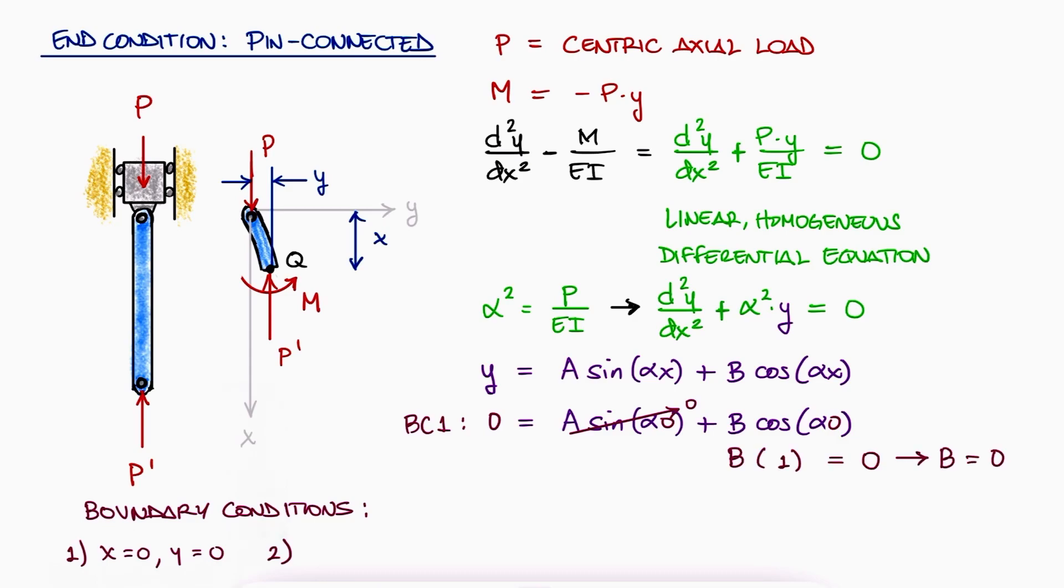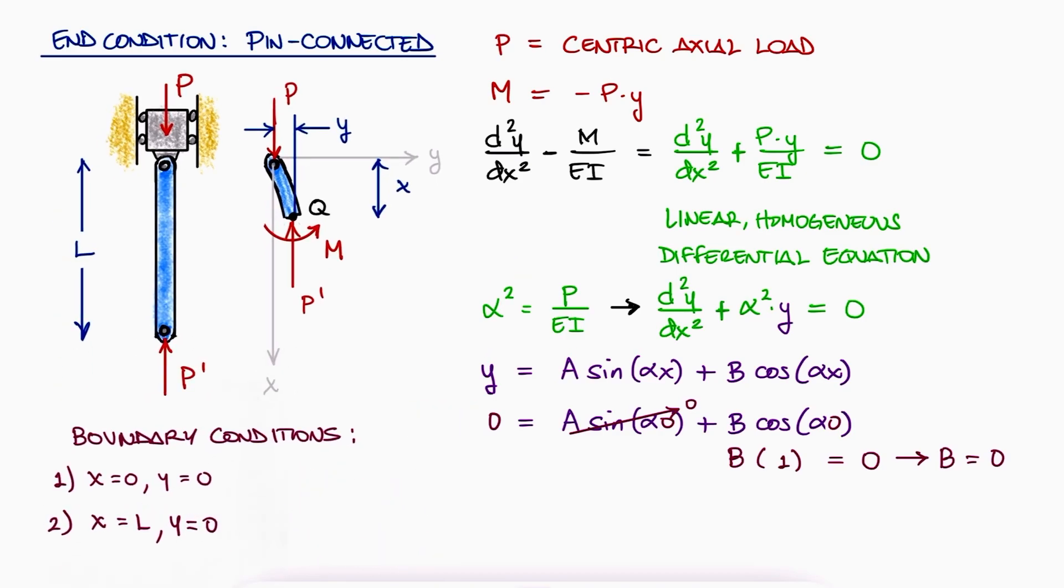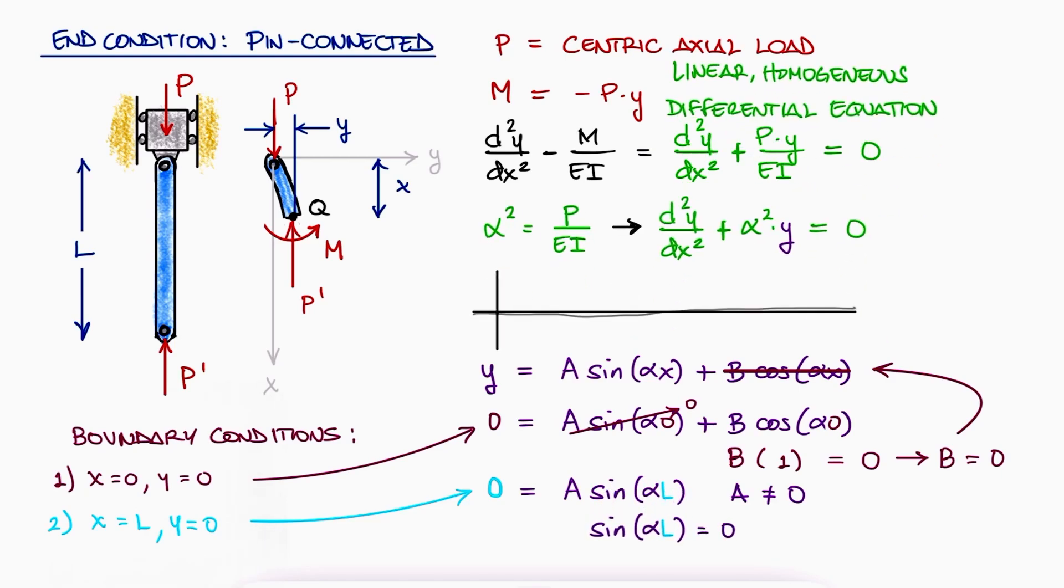The other boundary condition is at the other pin, where y is still zero for x equal to L. Substituting these values, we see that A sin(alpha L) has to be zero. Since A can't be zero, otherwise the solution to y is y equal to zero, sin(alpha L) has to be zero. Since the sin function is zero for multiples of pi, the value for alpha times L has to be equal to n times pi.